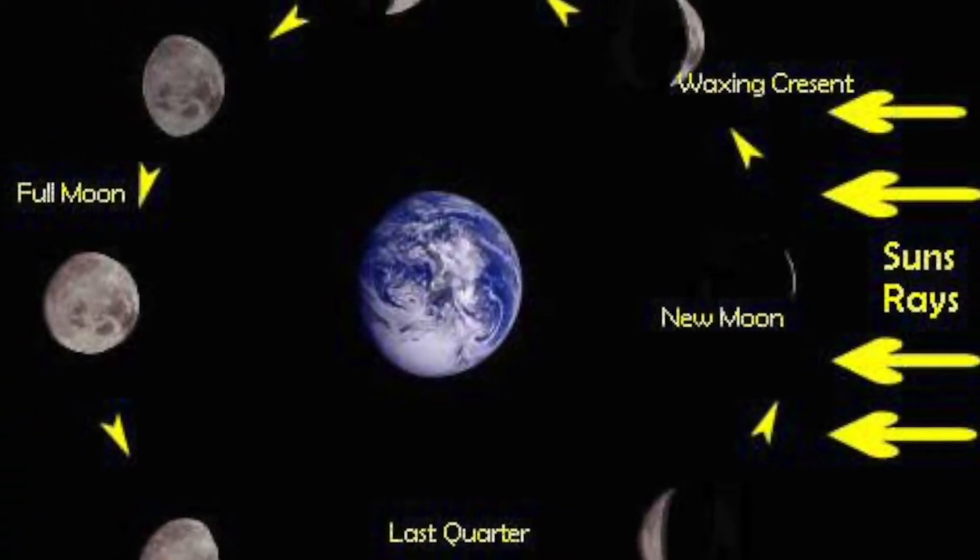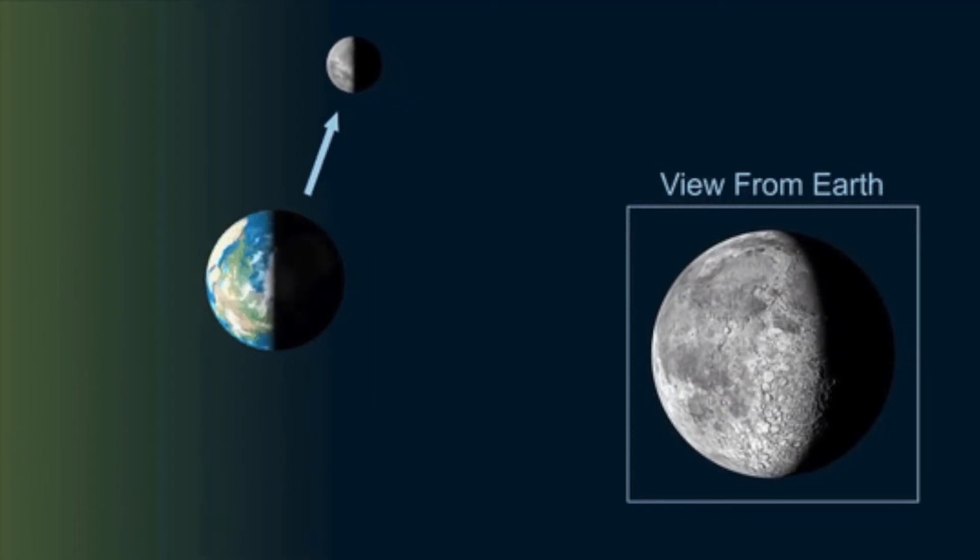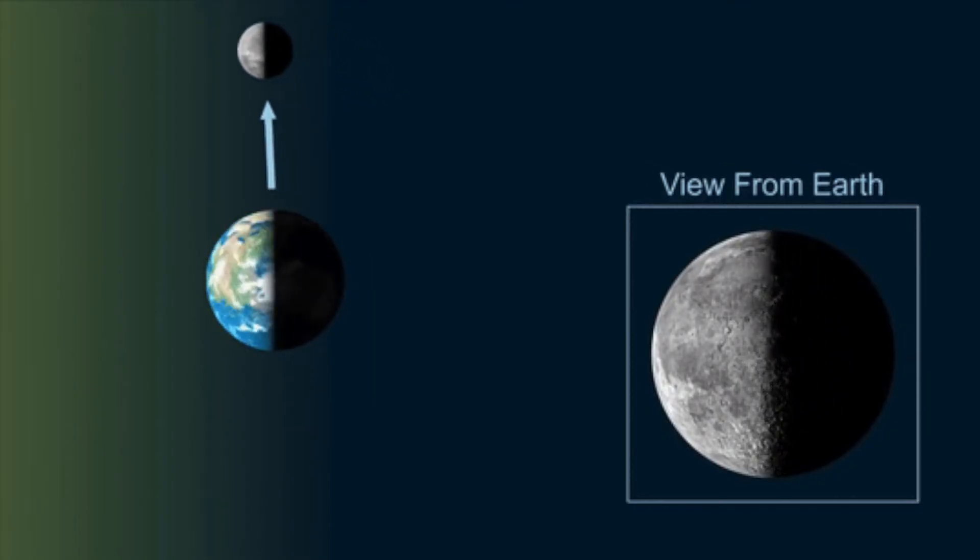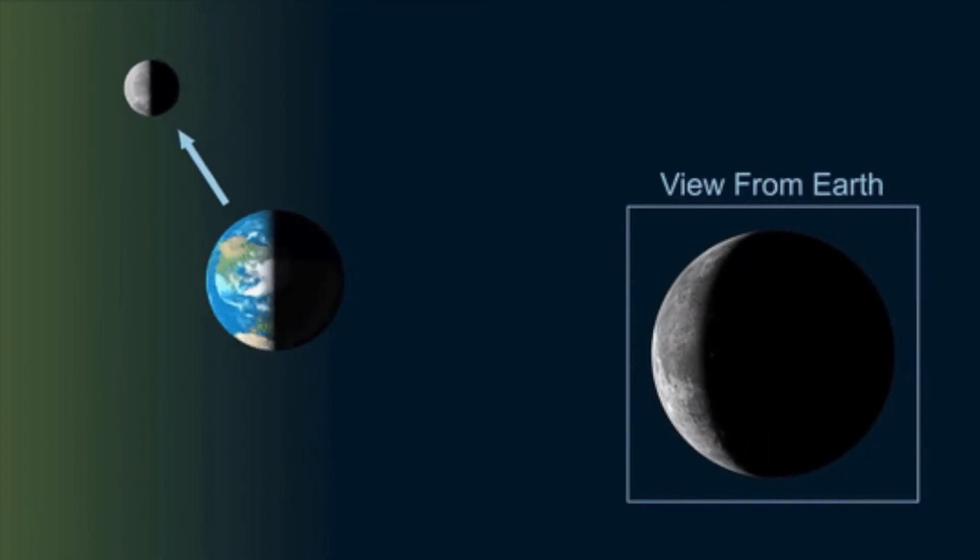The Sun is always shining from the center of the solar system. The Earth is orbiting the Sun. The moon orbits the Earth, and as it does, the angle of the Sun's rays illuminates the close half of the moon, just like the Earth's day and night.